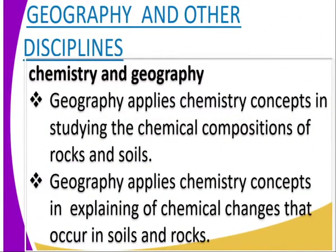When we start looking at geography and other disciplines, we look at them classified in disciplines. We start by looking at chemistry and geography. Geography applies chemistry concepts in studying the chemical composition of rocks and soils. Without chemistry knowledge, you cannot understand what composes the soils and rocks, or explain the chemical composition found in rocks. So geography is related to chemistry in those ways.